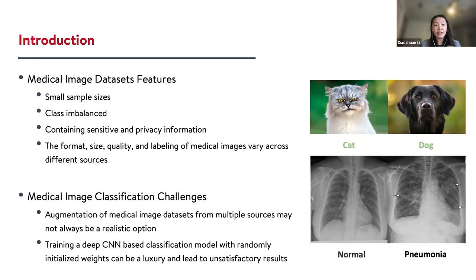For example, firstly, medical images are in general expensive and time-consuming to collect, and therefore the sample sizes of medical image datasets are small. Secondly, we can always observe class imbalance in medical image datasets. Other than that, medical images also contain sensitive and private information of patients.